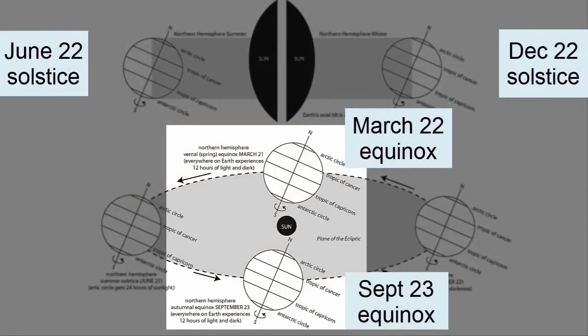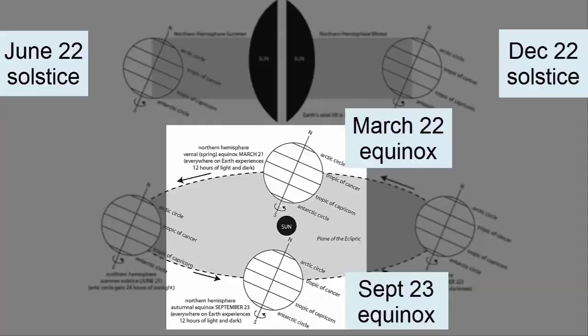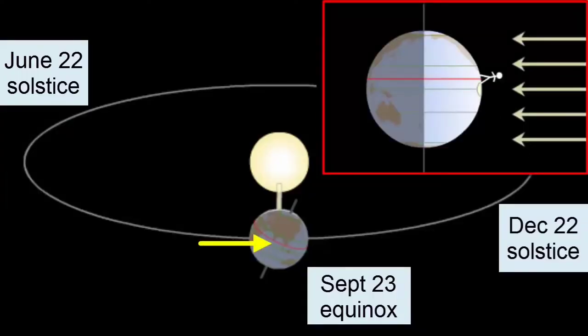the tilt causes neither pole to face away or towards the Sun. As the Earth rotates every 24 hours, each area of Earth's surface will receive 12 hours in view of the Sun and 12 hours out of sight — 12 hours of day, 12 hours of night. Equal lengths of day and night is why this time is called an equinox. As the Sun's rays hit the surface, they are strongest at the equator, directly in the middle, where they hit at a 90 degree angle.